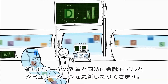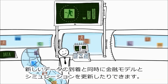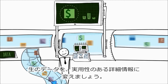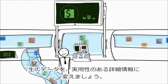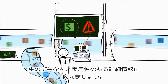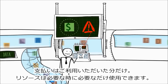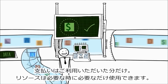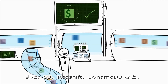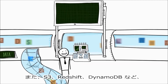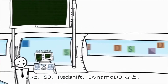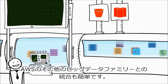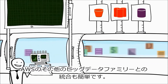Or update your financial models and simulations as soon as new data arrives. Turn raw data into detailed, actionable information, paying for the resources you need as and when you need them. And easily integrate with the rest of the Amazon Web Services Big Data family, including S3, Redshift, and DynamoDB.